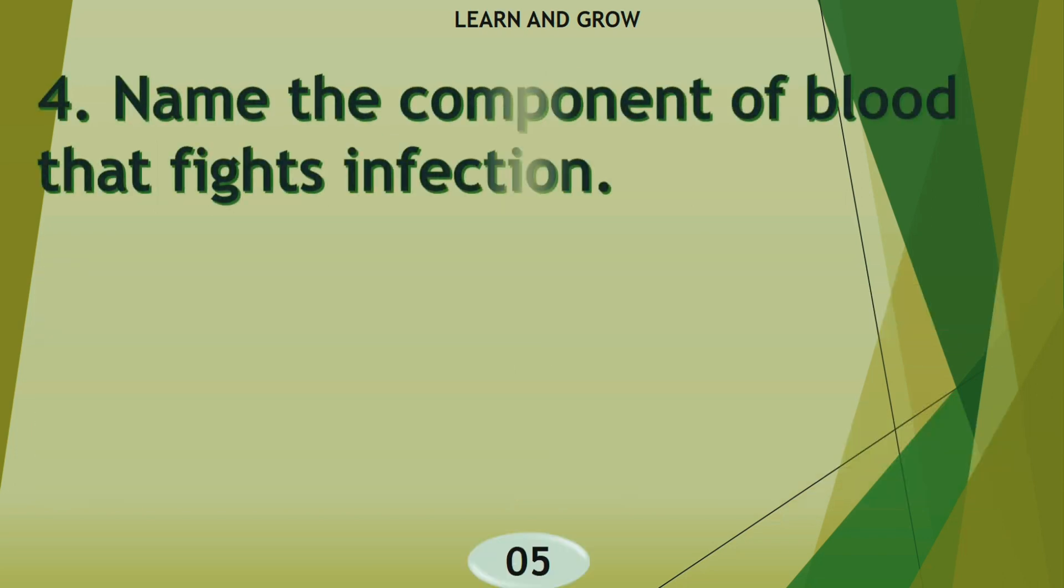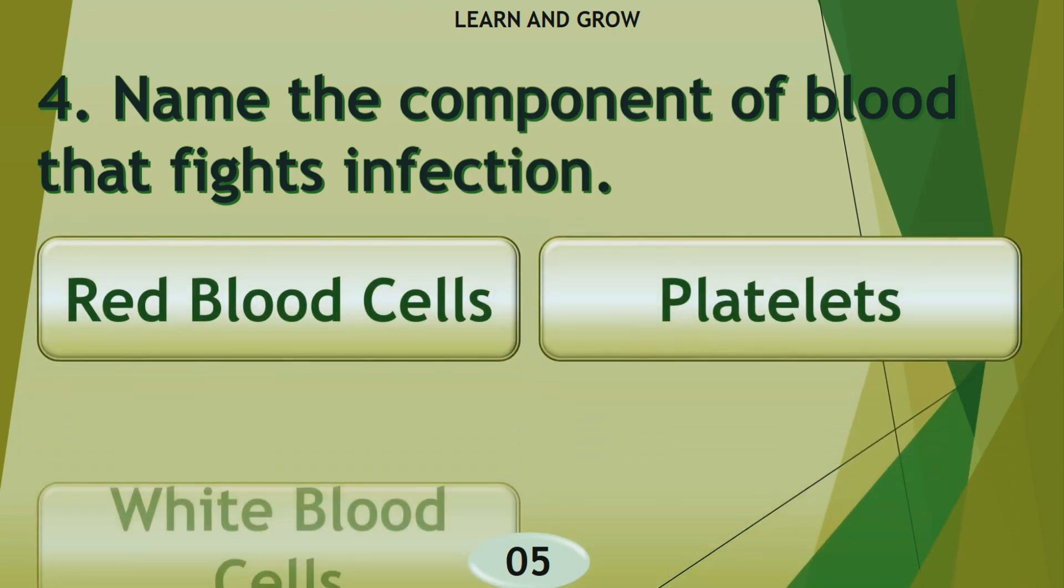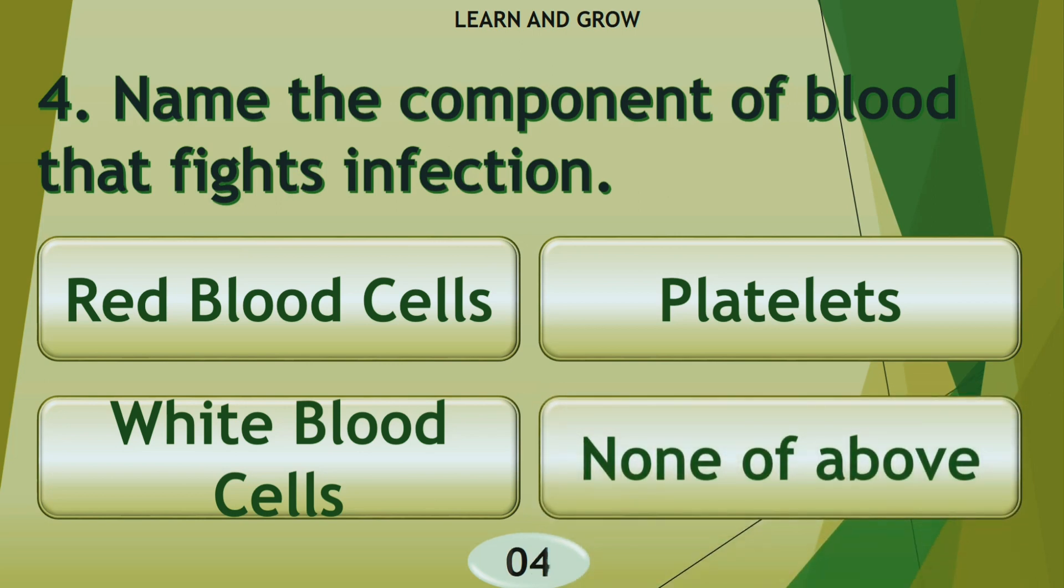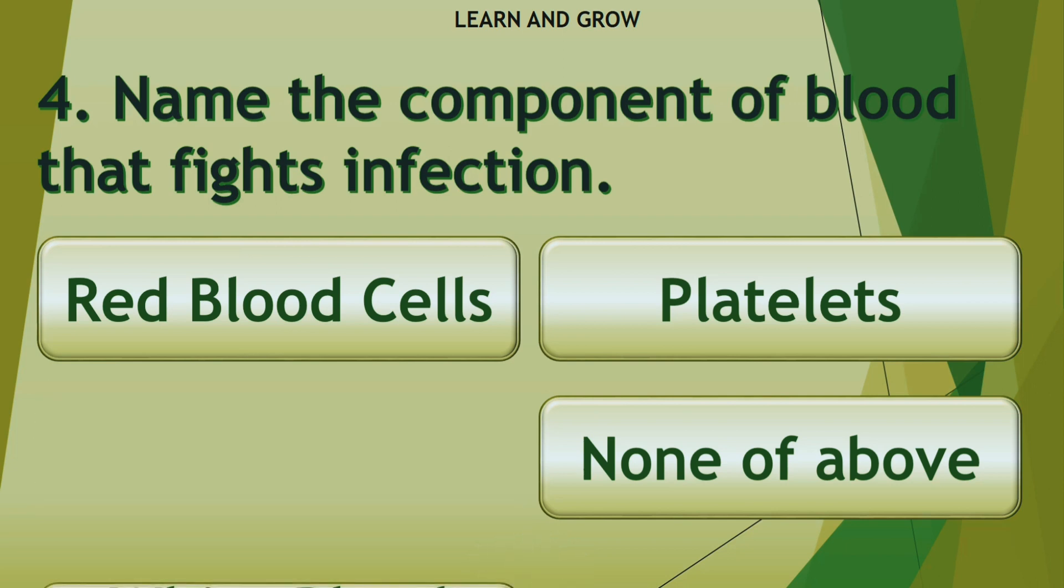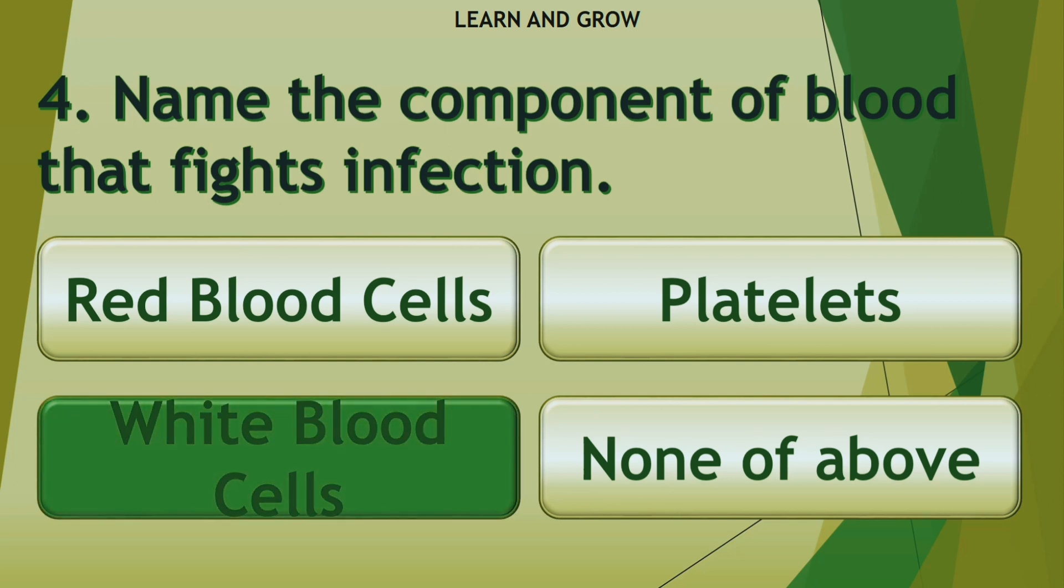Name the component of blood that fights infection. Options are A: red blood cells, B: platelets, C: white blood cells, or D: none of above. The right answer is white blood cells.